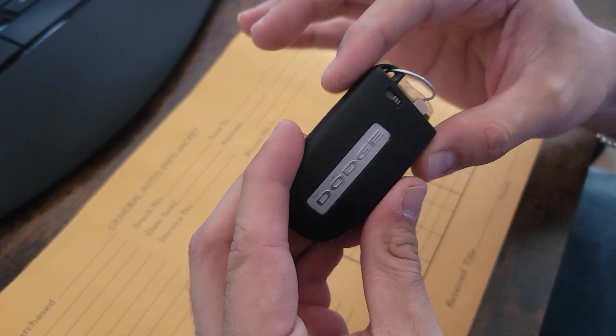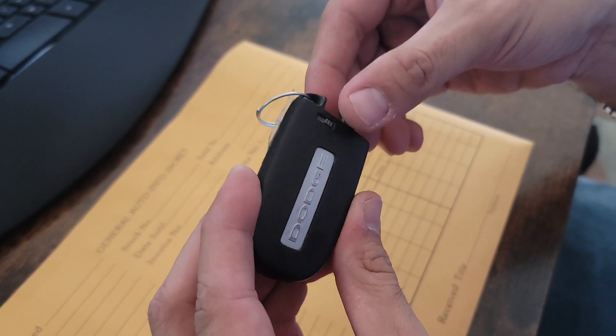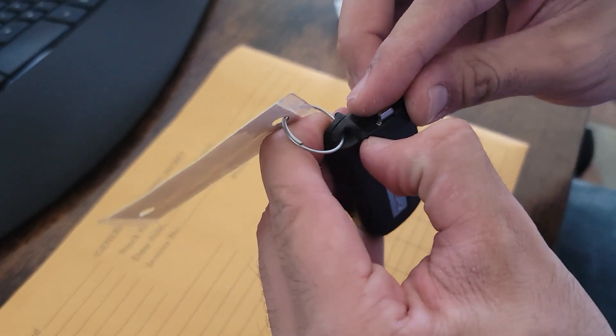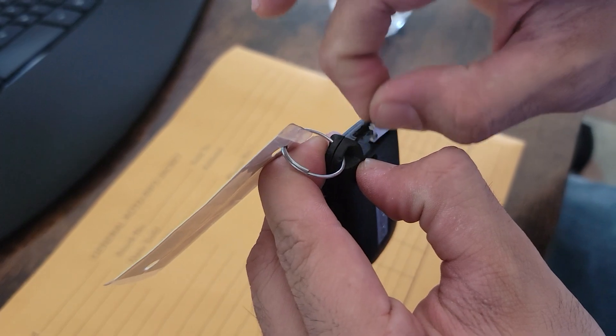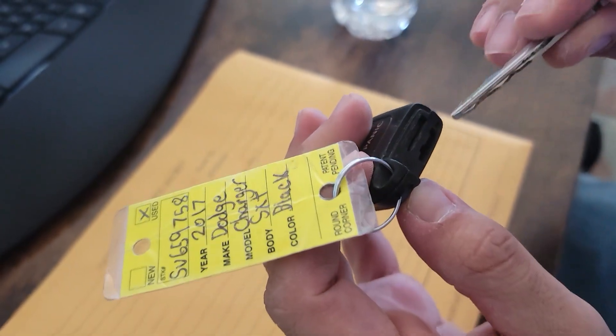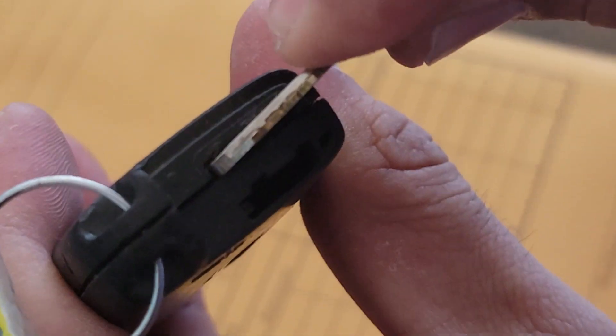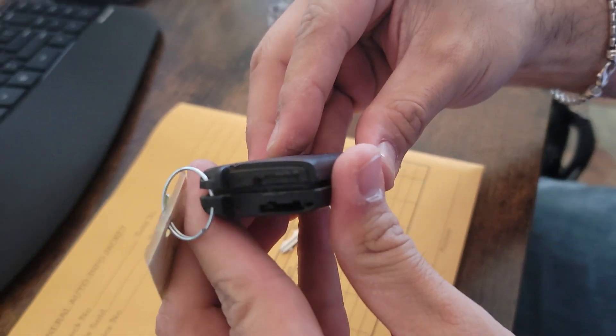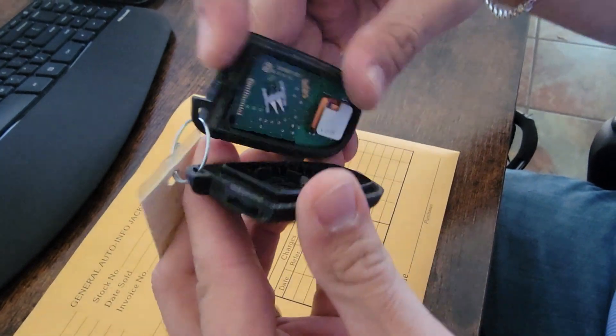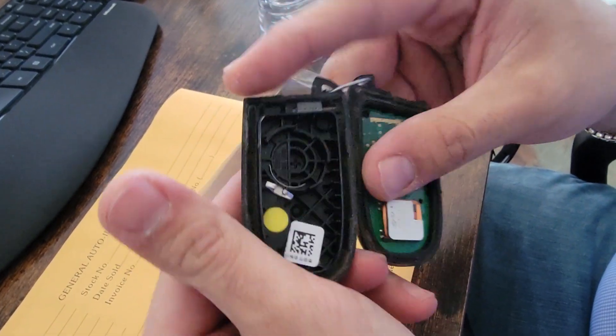Your key will usually have the actual key right here. You're going to need to put this little spring to the side and take that key out. There's a slot right here you can pry it like that, and then it's going to open up. Once it opens up, you are able to replace your battery.